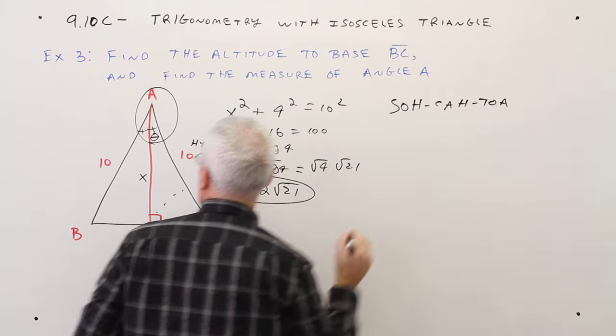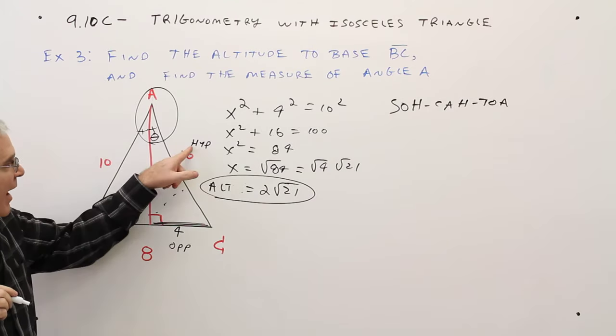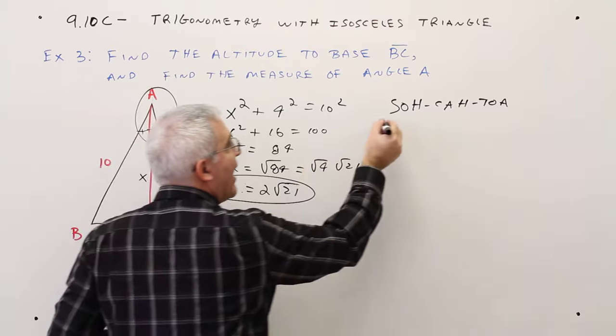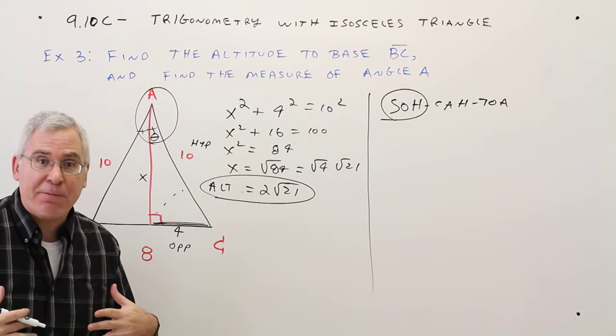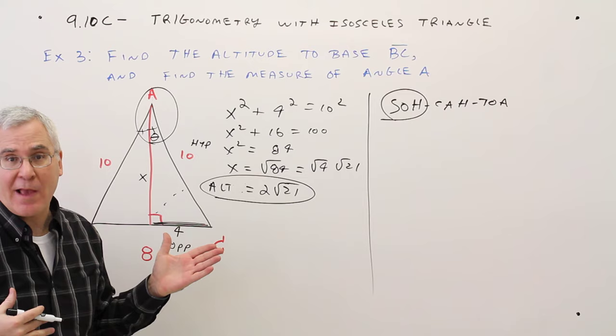SOHCAHTOA. So something that has an O and an H, that's going to be sine. So that's how I know to use the sine function as opposed to cosine or tangent.